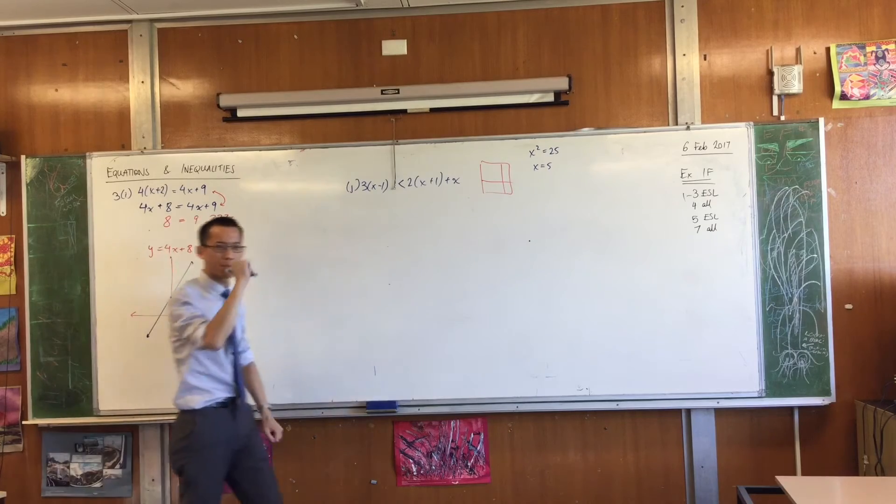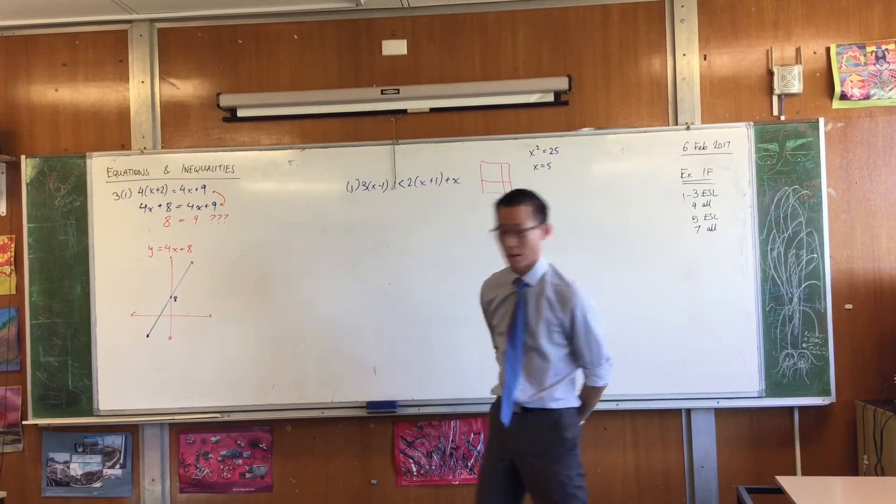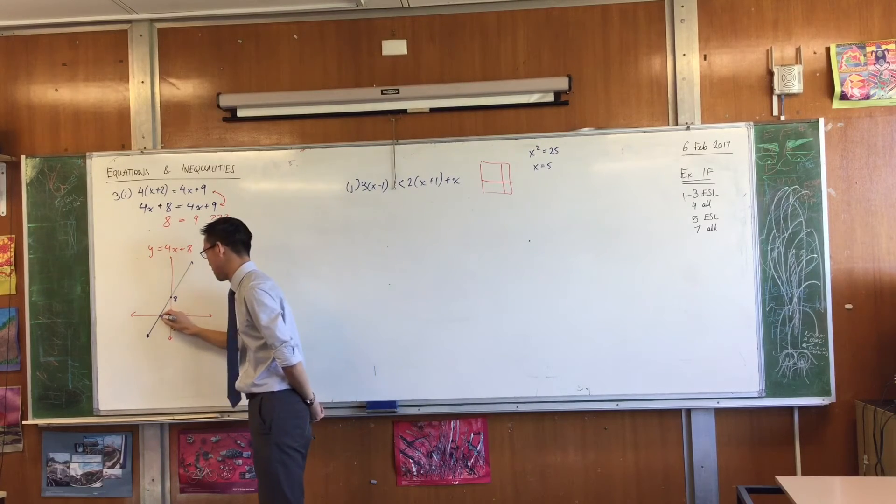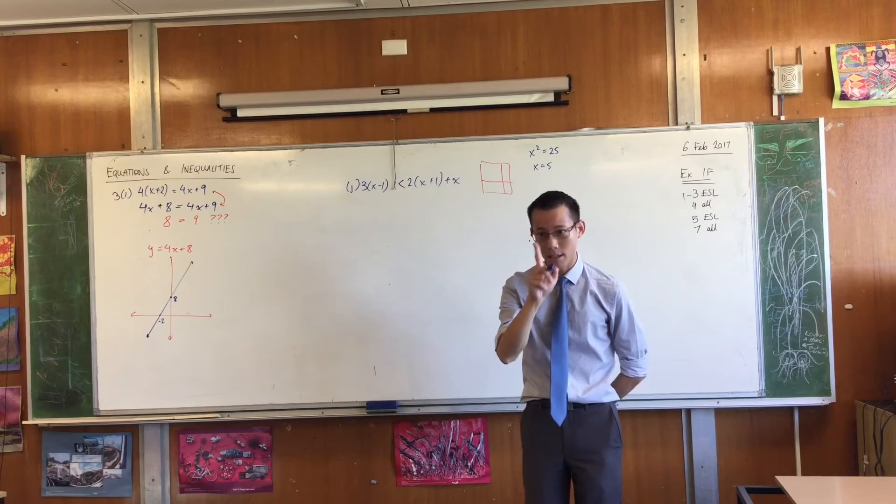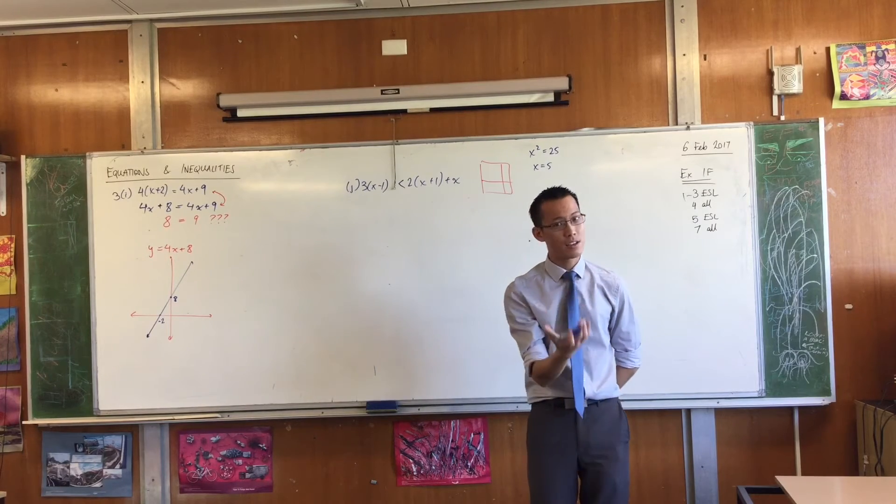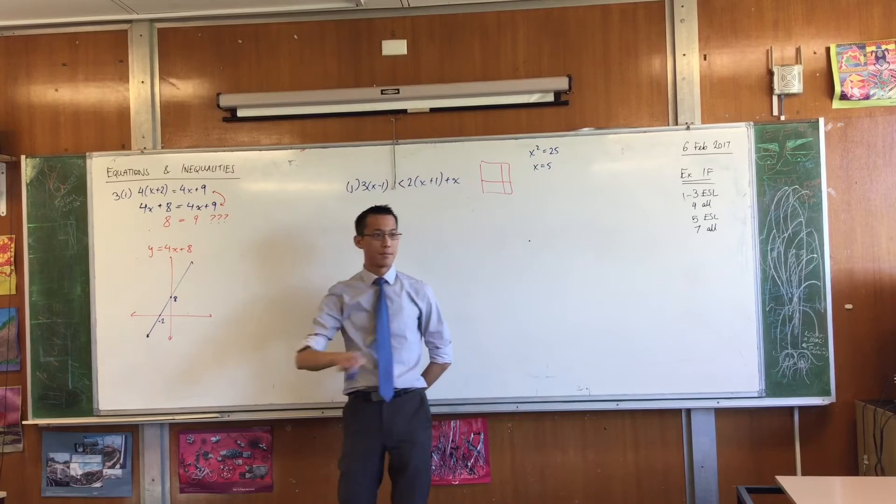Stay with me, stay with me. So, I think that's a reasonable graph of y equals 4x plus 8. And this happens to be negative 2. Okay? Now, think. Think. If I now ask you to graph y equals 4x plus 9. Again, it's got that 4x, which tells you the gradient.